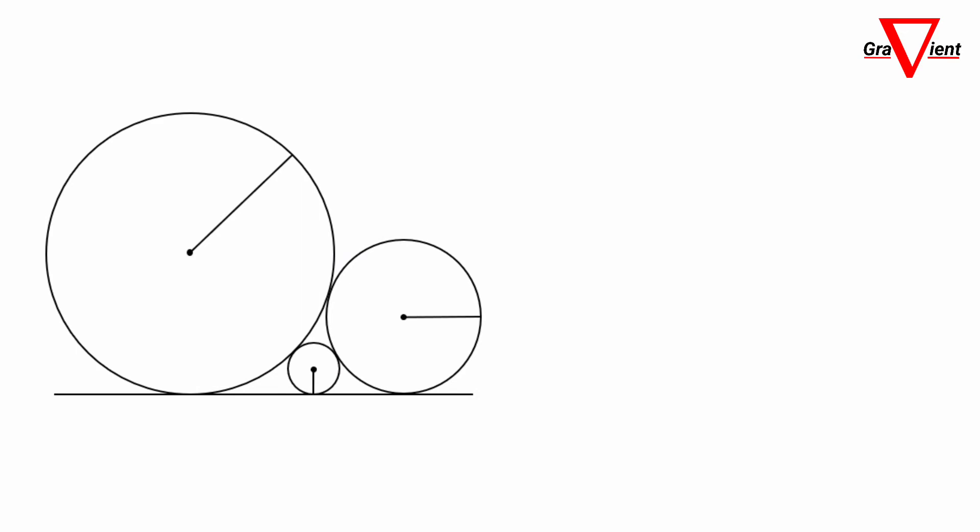Here's the answer — did you get it right? Now let's generalize this problem to find an interesting relationship between the radii of the three circles. We'll do the same steps as before, but with circles of arbitrary radii A, B, and C.